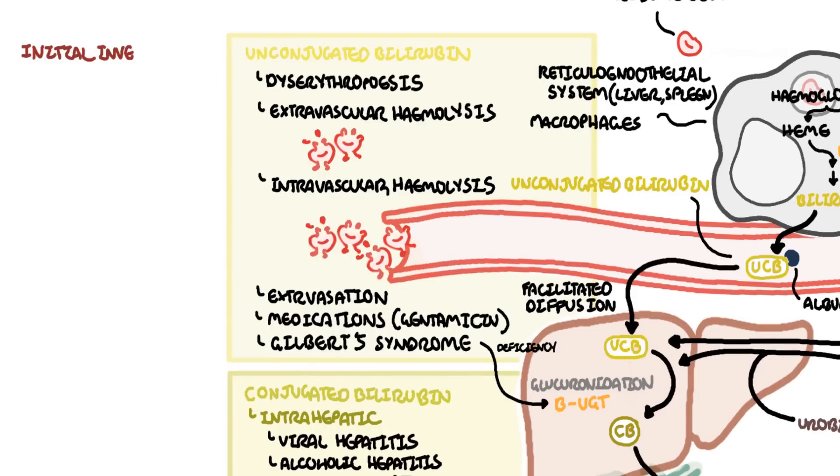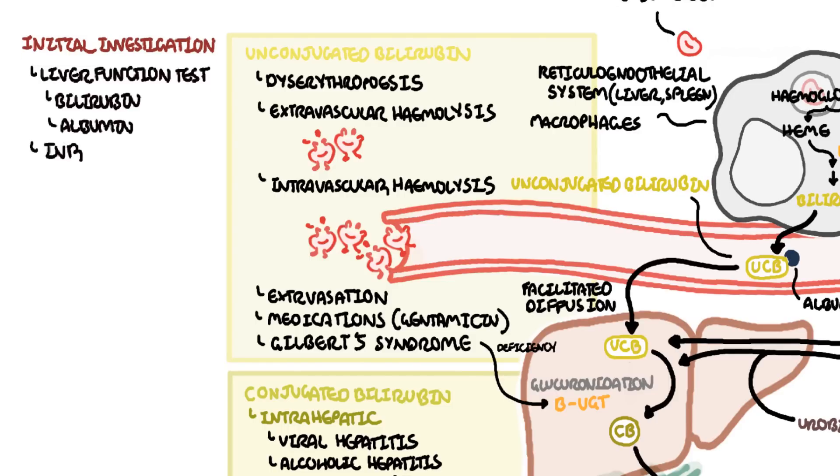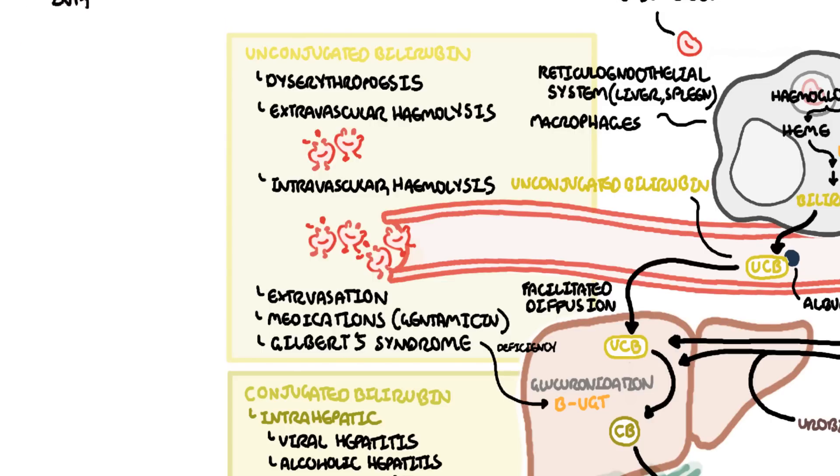The initial investigation to order in someone with jaundice is the liver function test including bilirubin, albumin, and checking the international normalized ratio or INR. The bilirubin can be further differentiated into conjugated or unconjugated. In jaundice with unconjugated bilirubin, the liver function tests are not deranged because there are usually problems with red blood cells. In this scenario, consider ordering a hemolytic screen including full blood count, blood film, reticulocyte count, haptoglobin, lactate dehydrogenase, and the Coombs test.